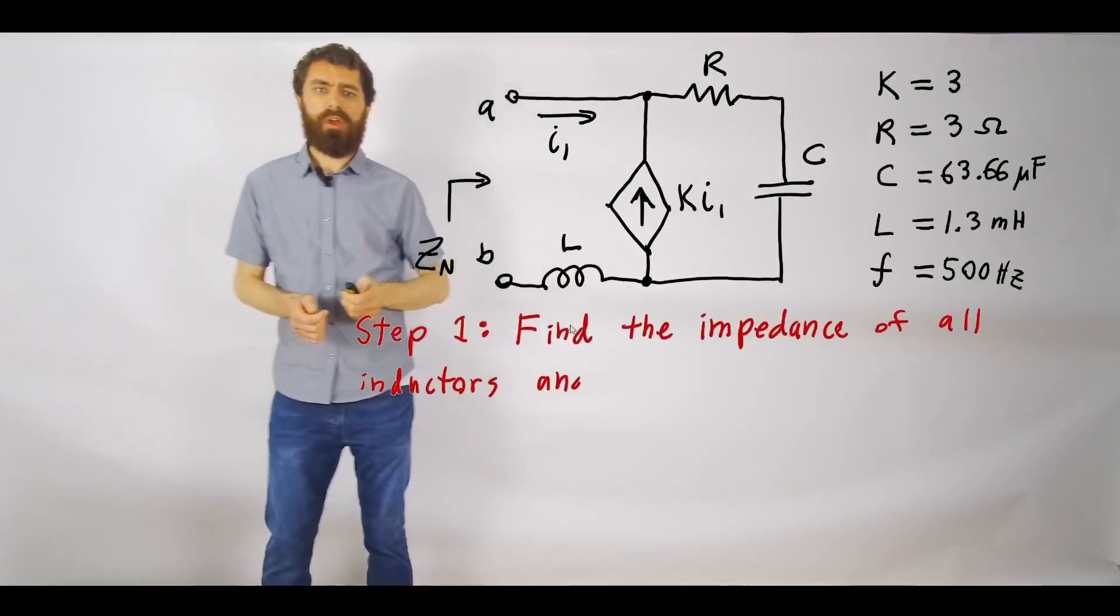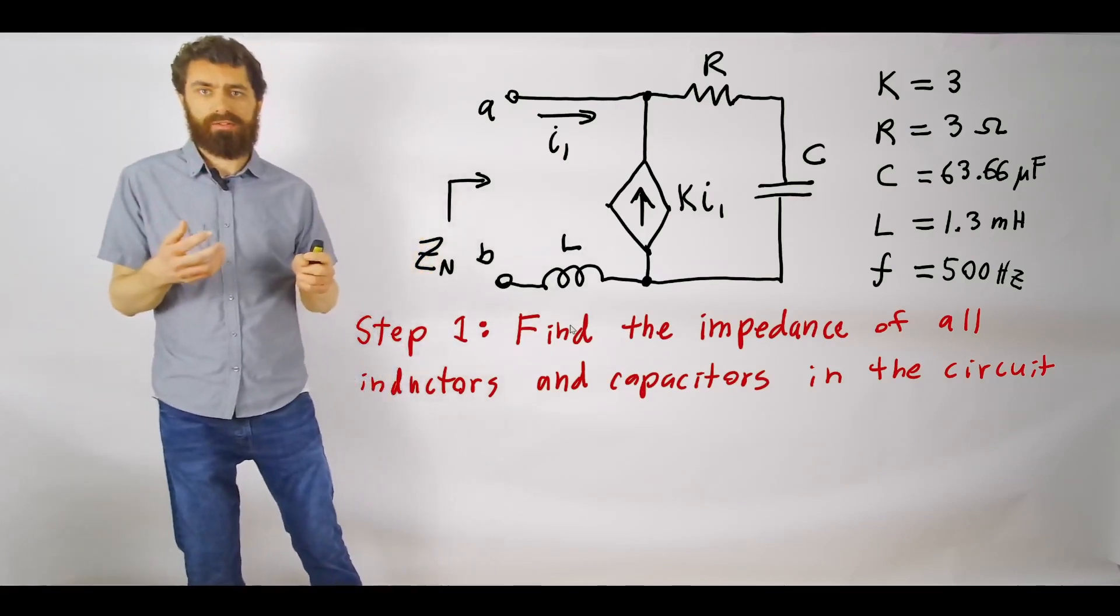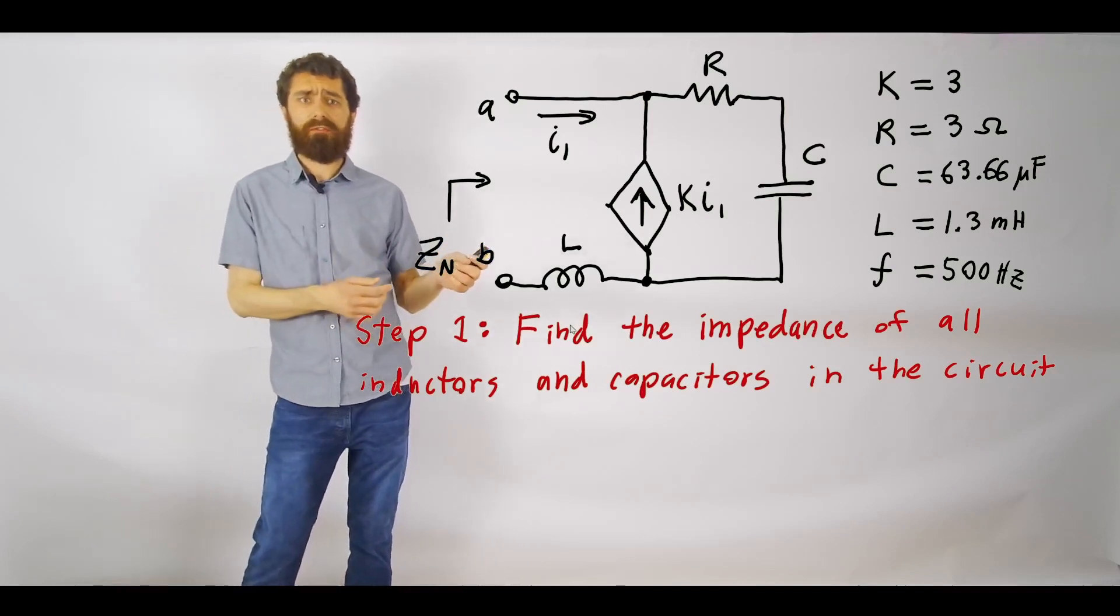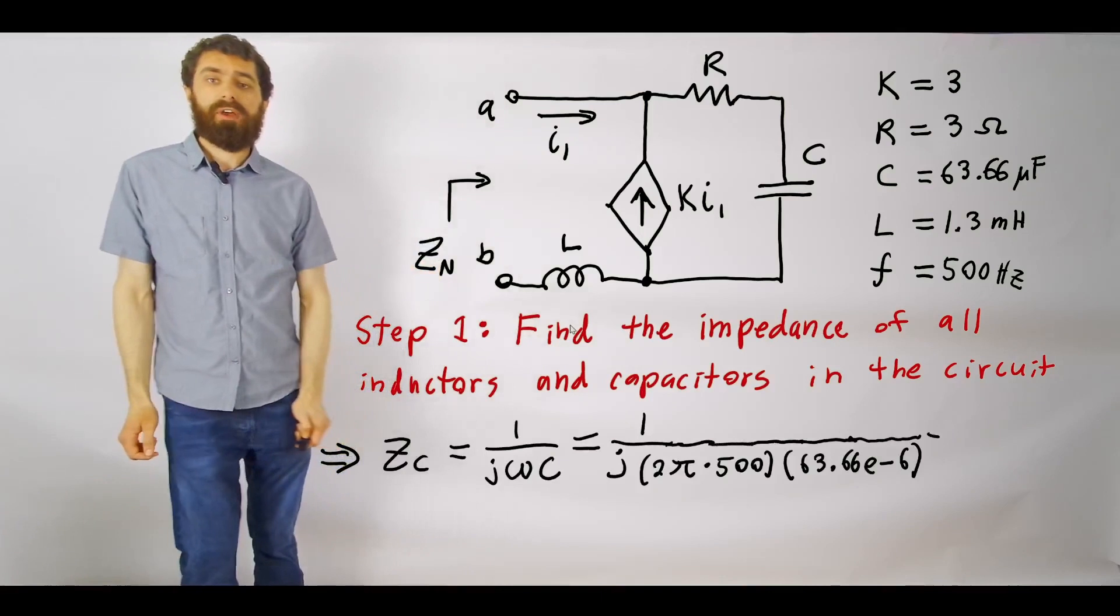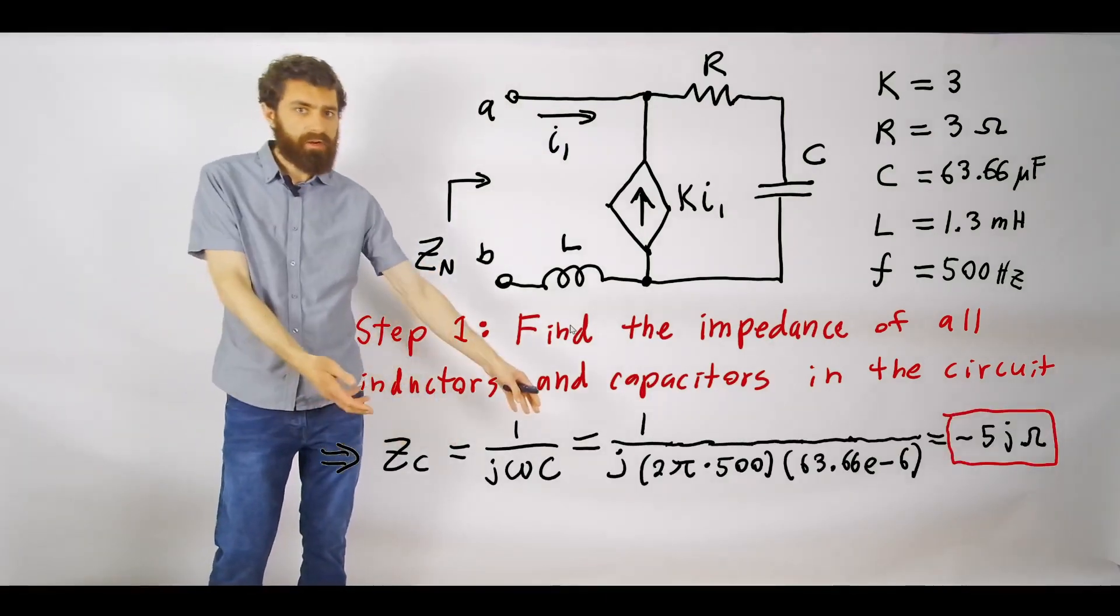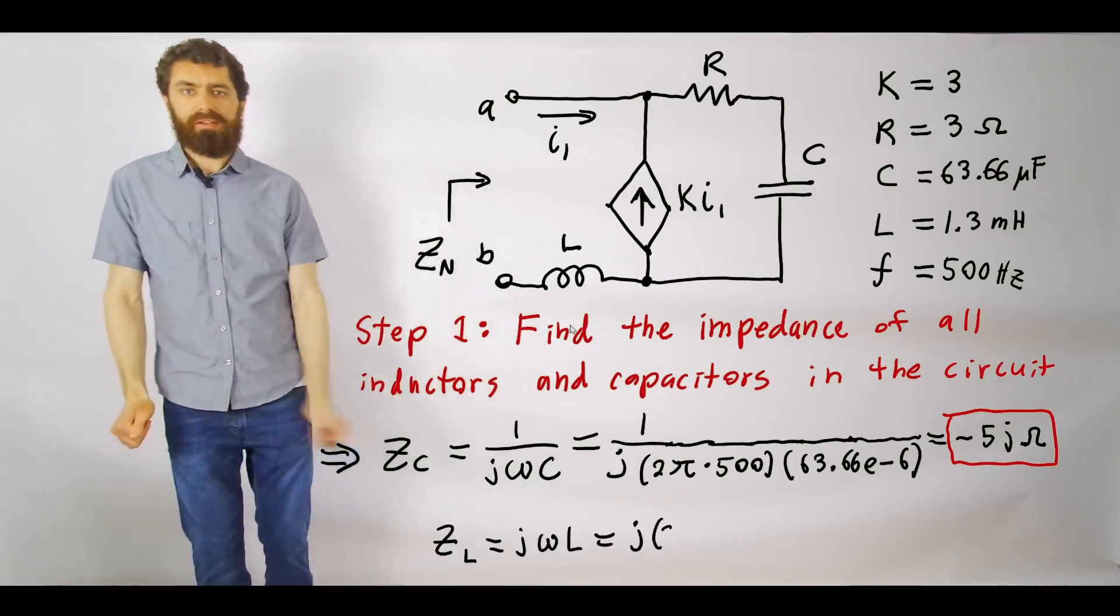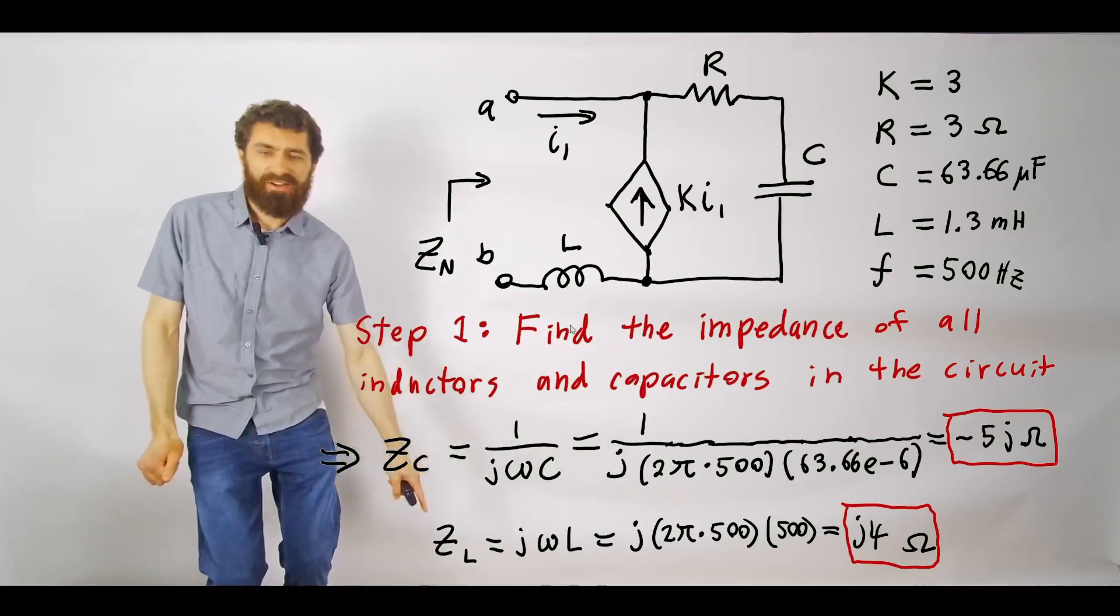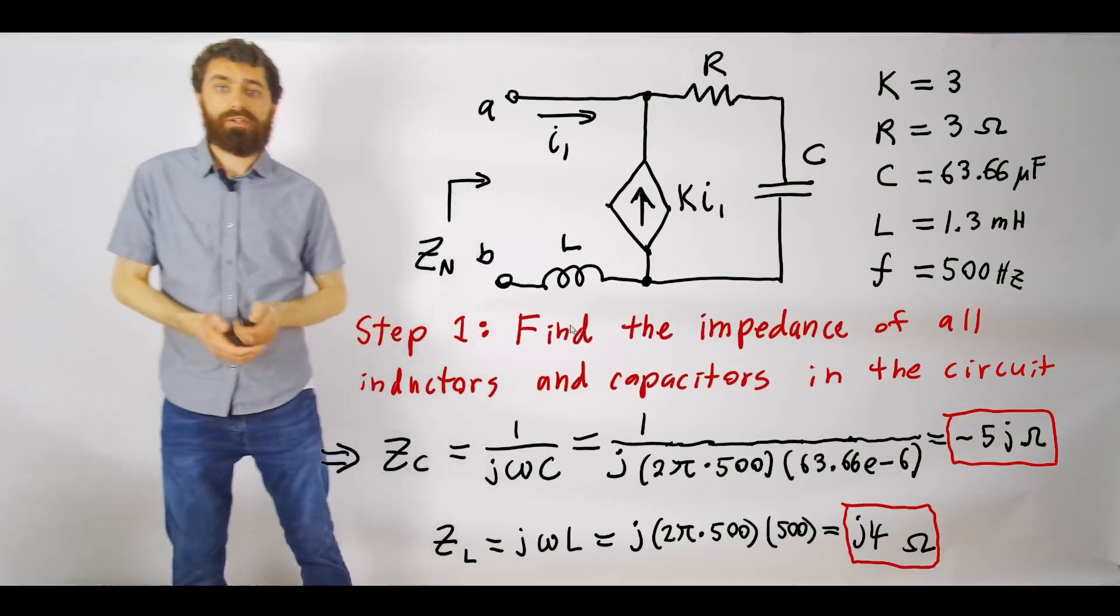you'll always want to find what the impedance is of all of your inductors and capacitors in the circuit. We're given a frequency of 500 Hertz and we can go ahead and find out what zc is, which is one over j omega c. Plug in our values there, we get minus five j ohms. And then we find the impedance of our inductor, which is j omega l, and that ends up being j four ohms.